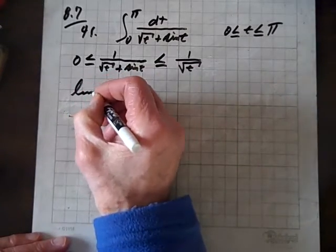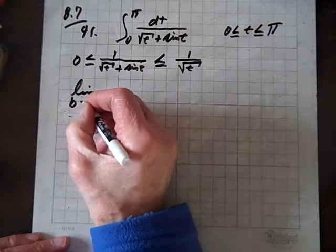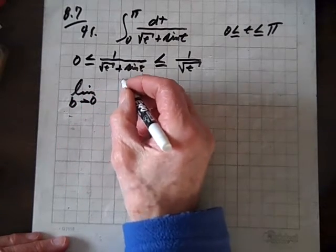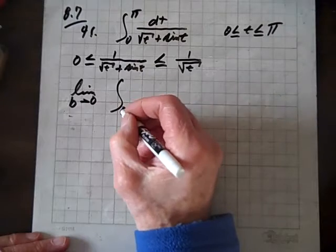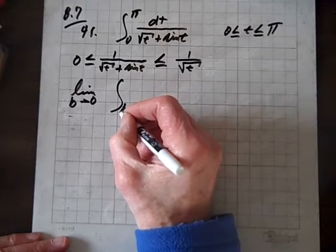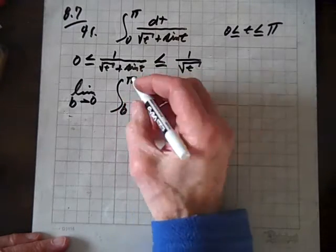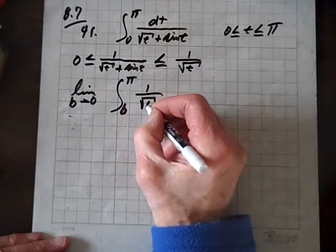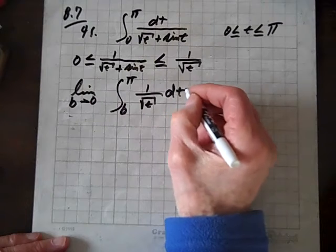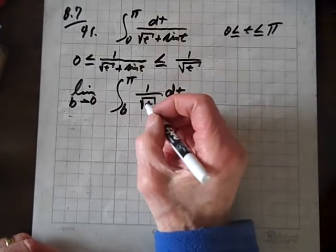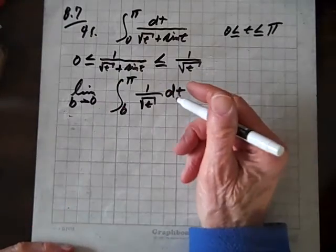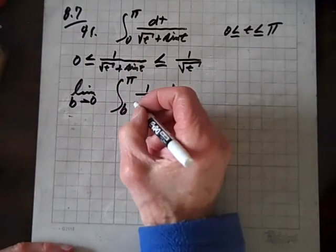We'll take the limit as b goes to 0 of the integral of b to pi of 1 over root t dt. And oh boy, if only we had a 2 here, then when we took the limit or the integral of that, it'd give us root 2.